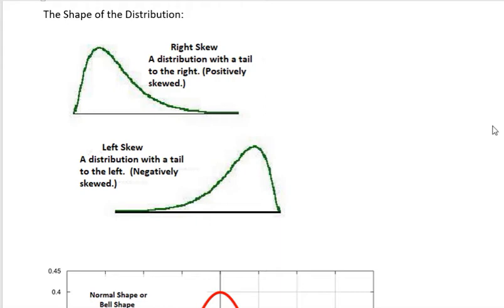Here are two pictures you can see. One is skewed to the right, and the other is skewed to the left. If it's skewed to the right, it's positively skewed, and that means it's a distribution with the tail to the right.